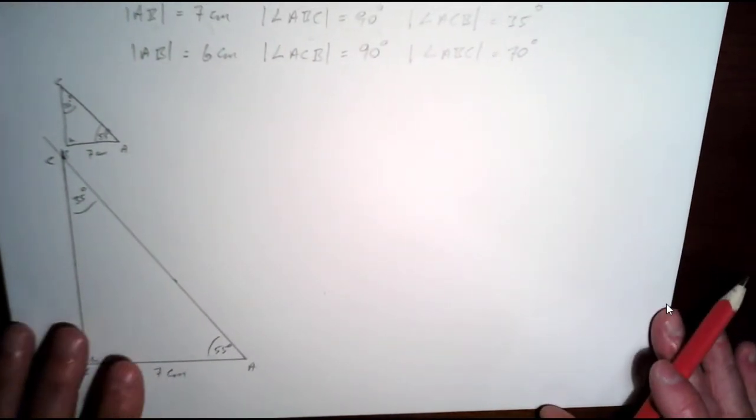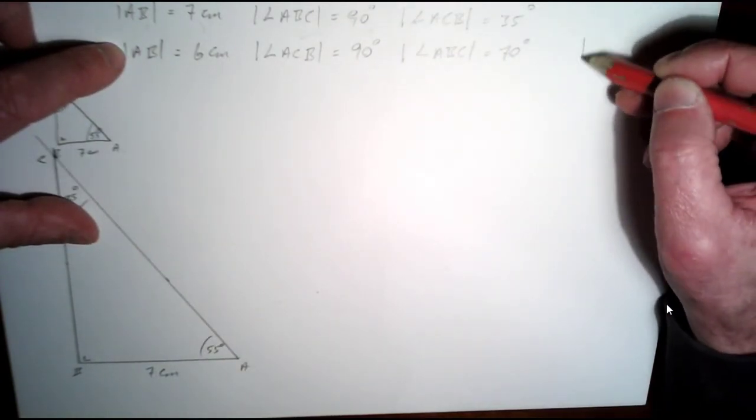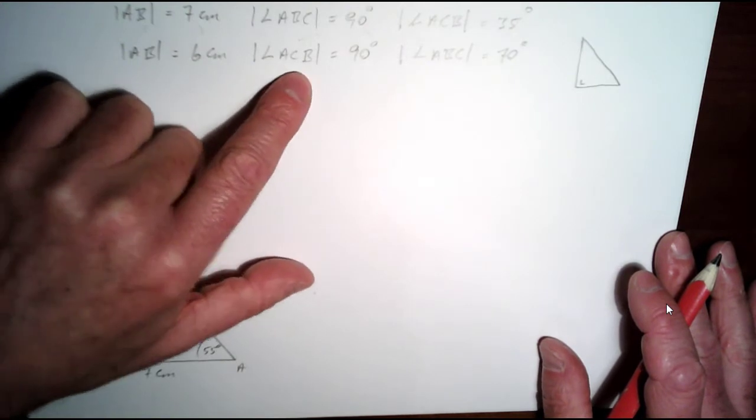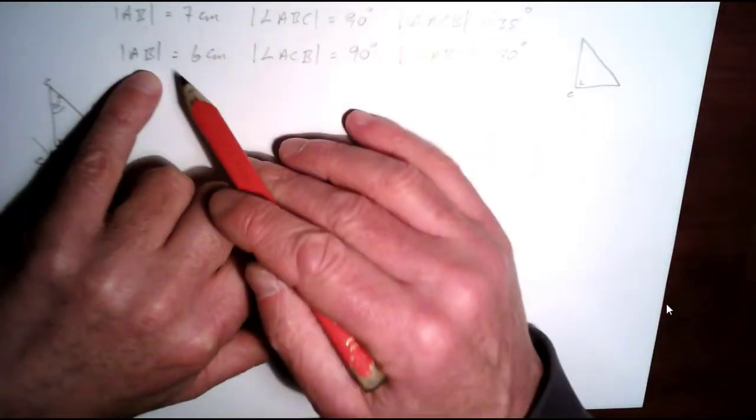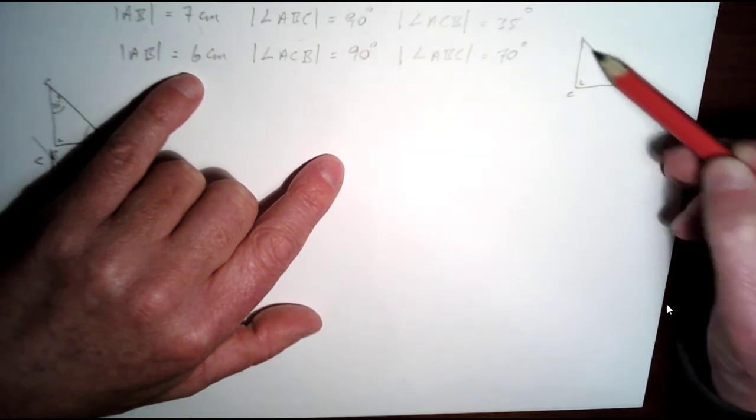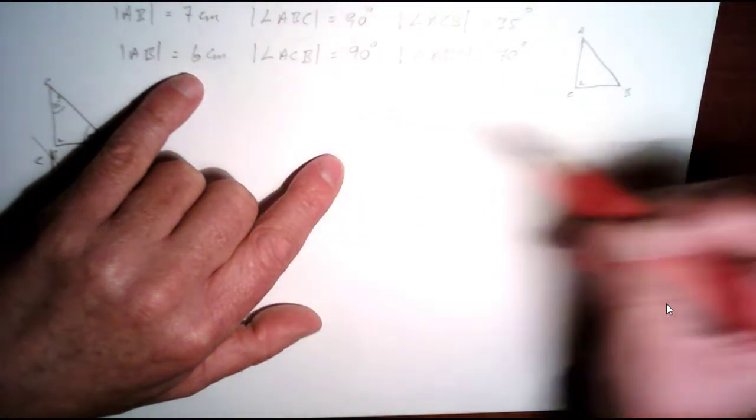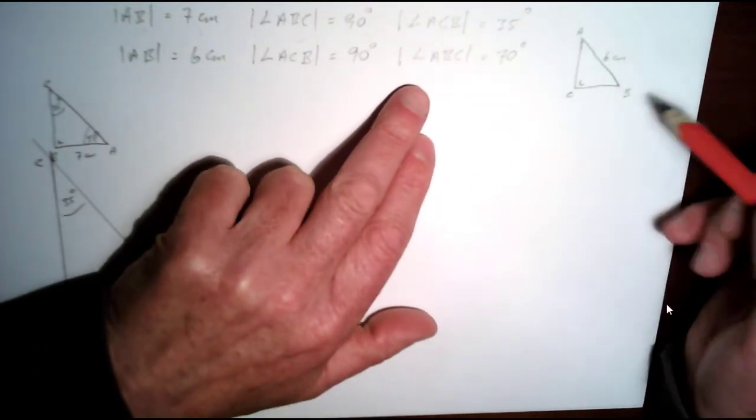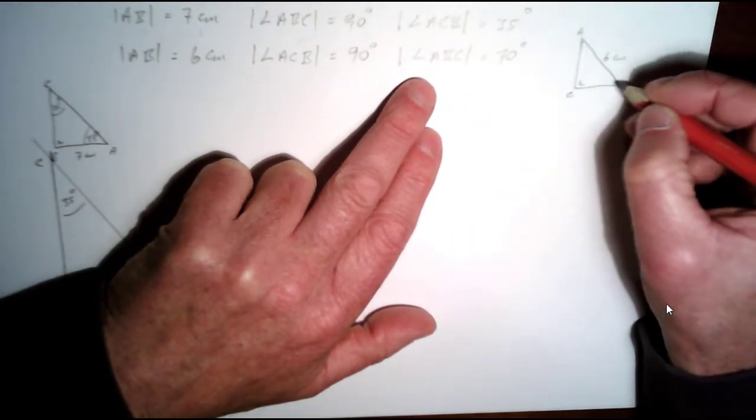Okay, let's look at our second triangle. So our second triangle here, let's just do a rough sketch first. Do it over here. So we have a right angle here. We have ACB is 90, so this is going to be C here. Now, okay, AB is 6 centimeters. So if C is here, that means AB must be here. So if we put, let's say, A there and B there, AB is 6 centimeters. So what they've actually given us here is the hypotenuse, 6 centimeters. This is C here, so that's 90 degrees. And ABC here is 70 degrees.